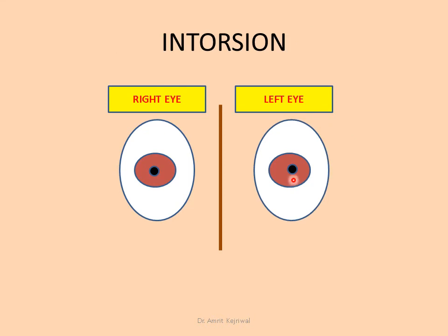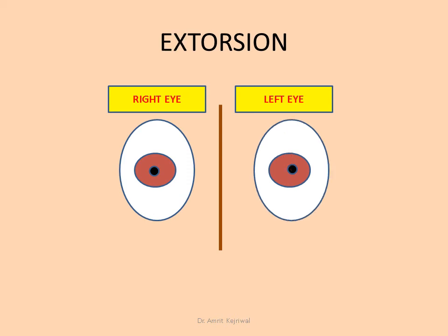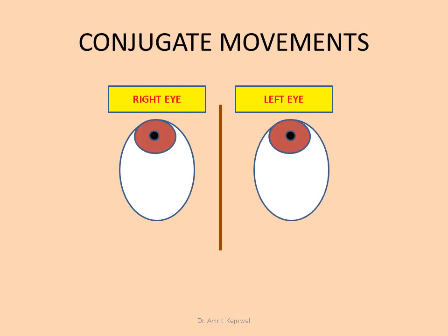So, from the center of the pupil, you draw a vertical line. If this line moves medially, it is called intorsion, and if it moves externally away from the midline, it is called extorsion. The line moves towards the nasal side — so this is called intorsion. From the vertical line moves towards the nasal side, it is called intorsion. Similarly, for extorsion, the vertical line moves outside — so, extorsion.